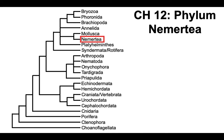Let's go back to the phylogeny that we looked at at the beginning of the semester. This is the phylogeny we constructed based on that 2020 paper looking at the kingdom Animalia. This is where the Nemertia are — right here, a sister group to the mollusks. These are not worms like annelids, and they are not worms like nematodes. They're completely phylogenetically separate.